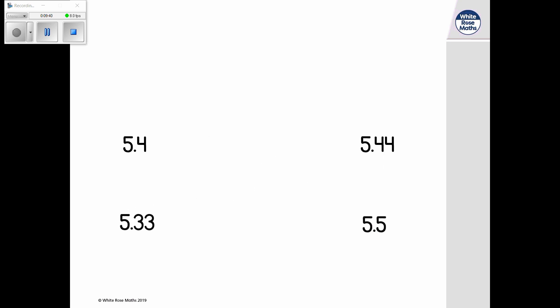We're left with 5.4 and 5.44 and can compare the hundredths. 5.44 has four hundredths, while 5.4 has no hundredths. So 5.44 has the greater value. We can now arrange the final two numbers.